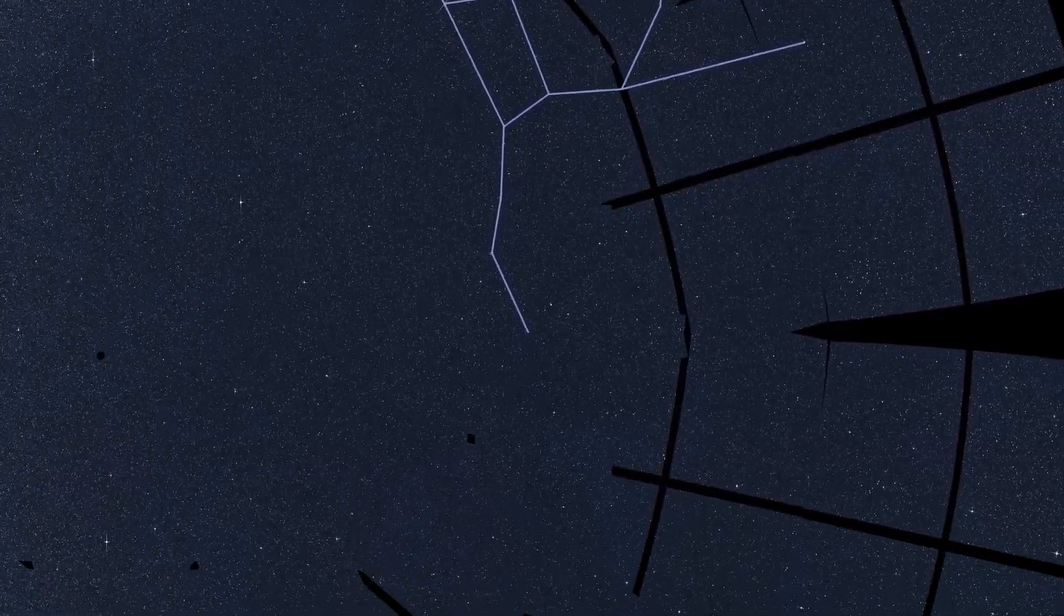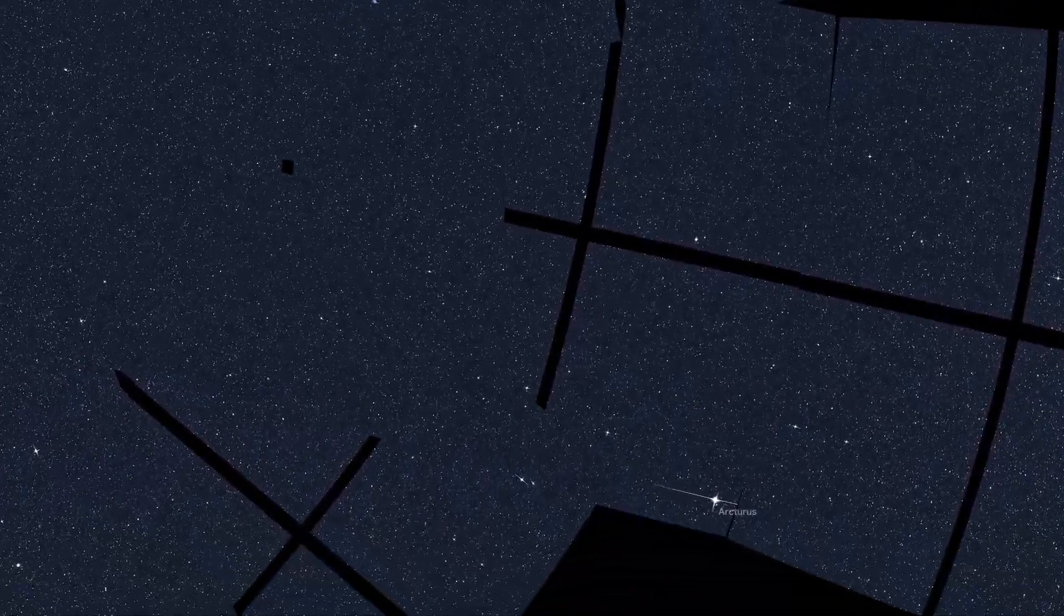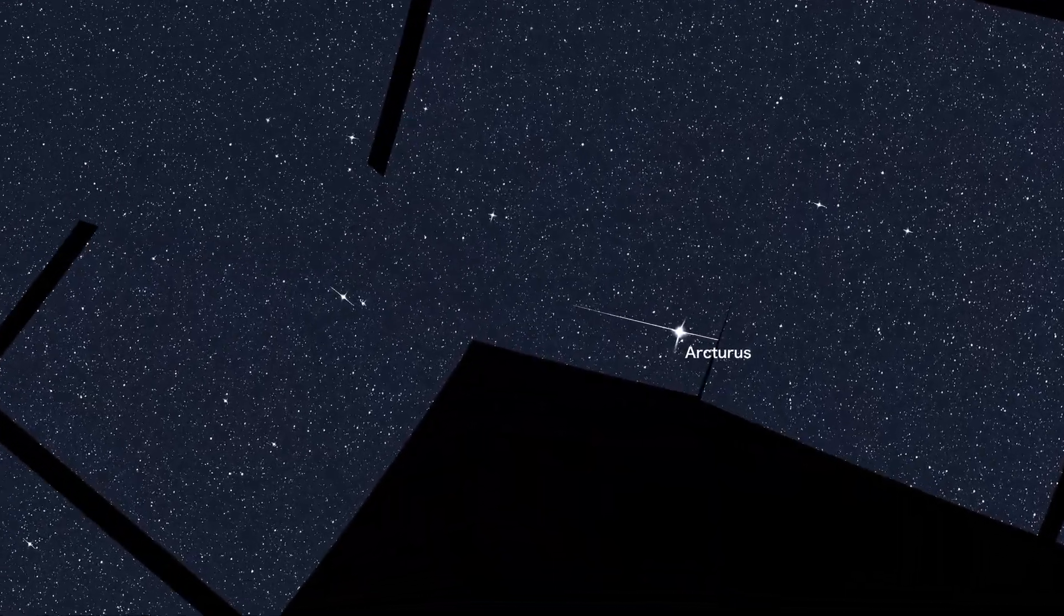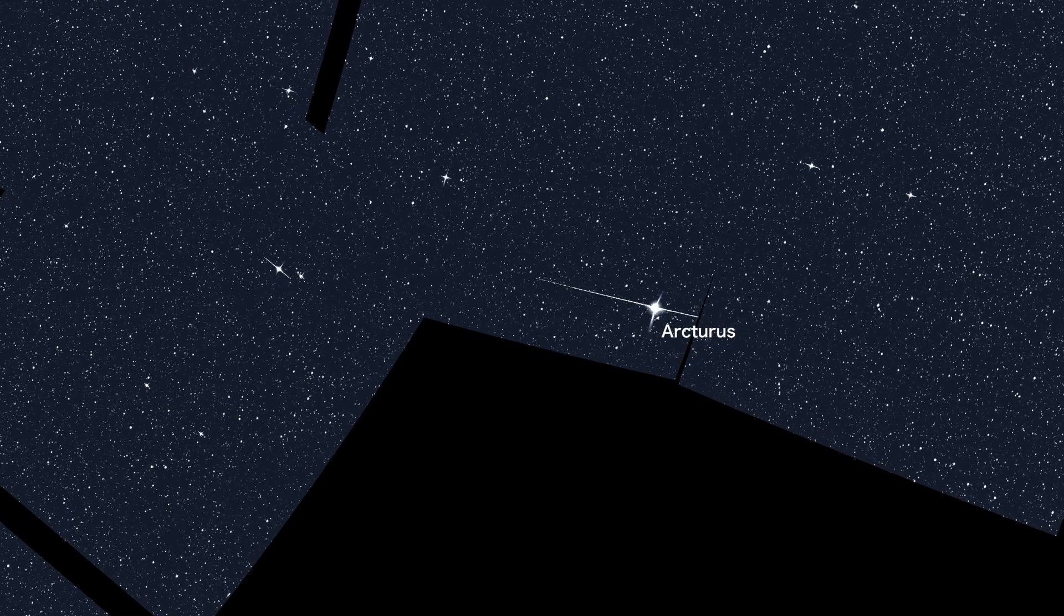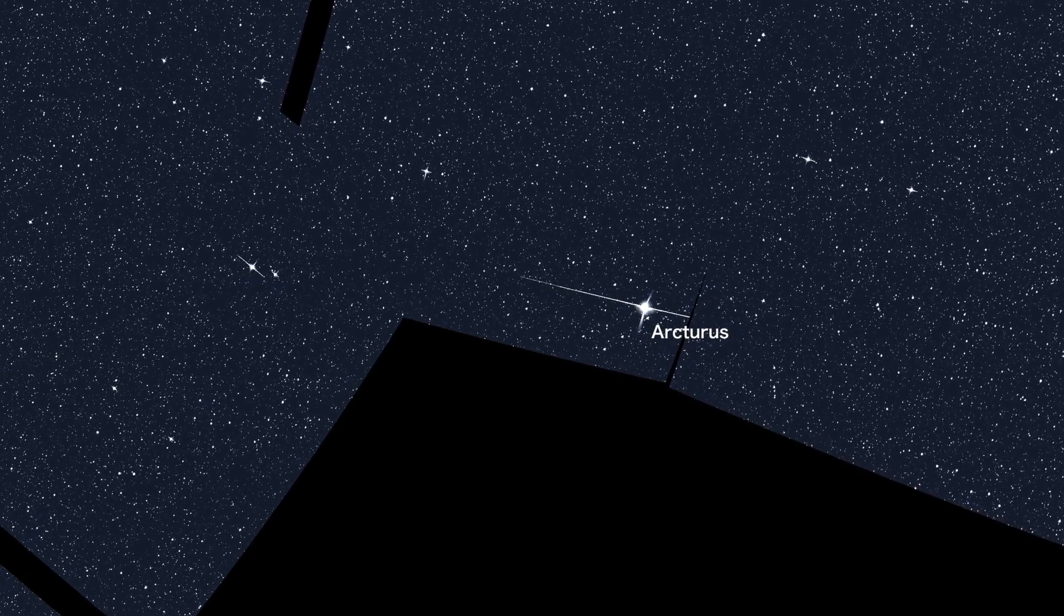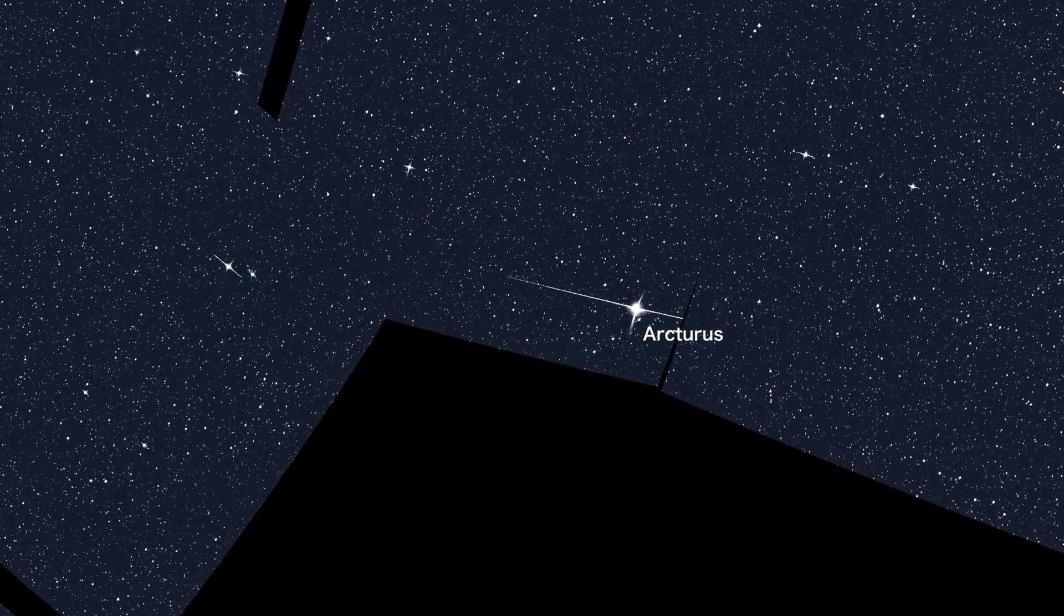Following the arc of the Big Dipper's handle leads to another prominent star, Arcturus. Located about 37 light-years away in the constellation Boötes, Arcturus is the fourth brightest star in the night sky.